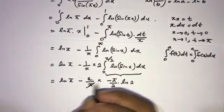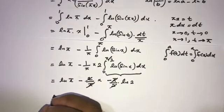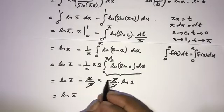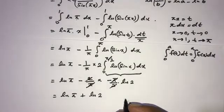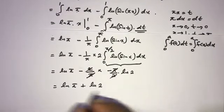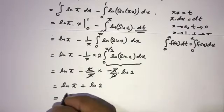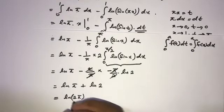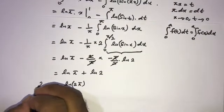So after simplification, applying the property that ln(a) plus ln(b) equals ln(a times b), we get 2 times I equals natural log of 2 times pi.